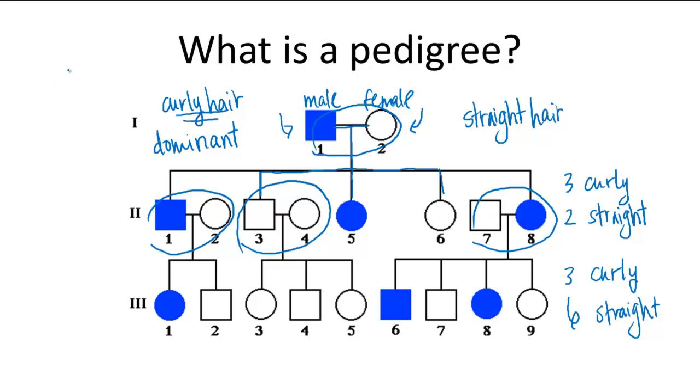And this can be shown through a half colored in individual. So it might be a circle that's half colored in or a square that's half colored in. And so again, these individuals have the allele but don't express it.